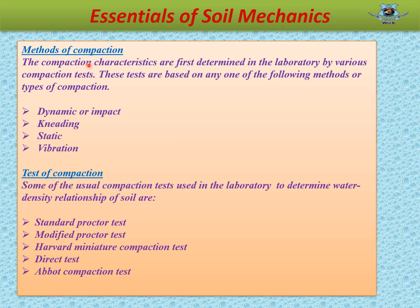Methods of compaction: The compaction characteristics are first determined in the laboratory by various compaction tests. These tests are based on any one of the following methods or types of compaction: dynamic or impact, kneading, static, and vibration.